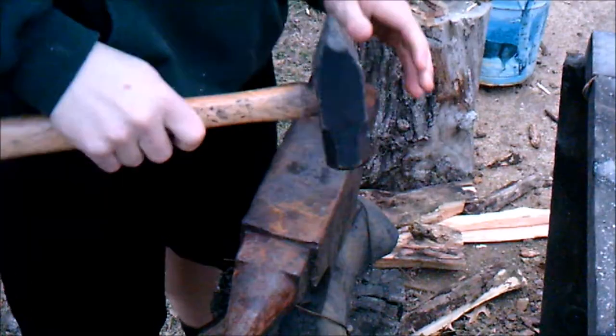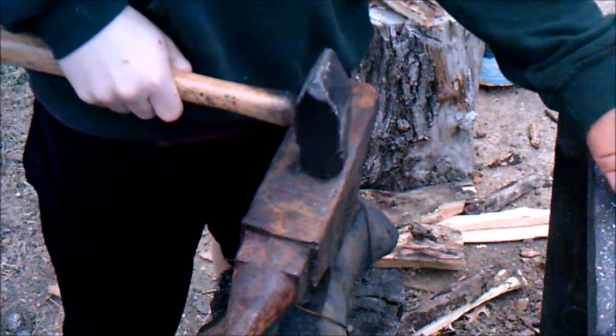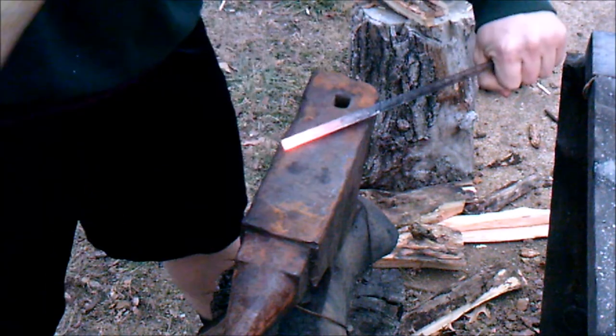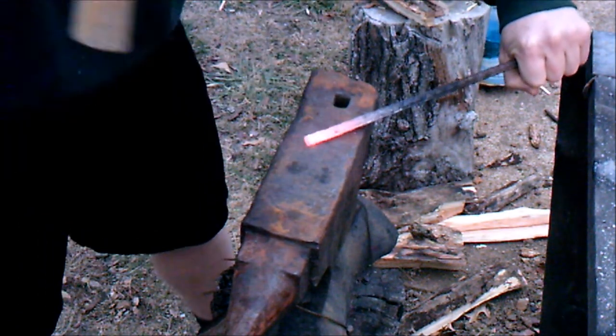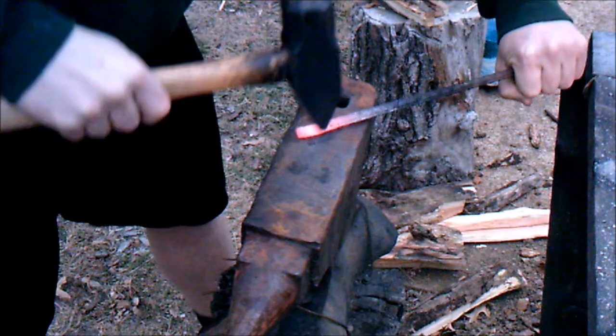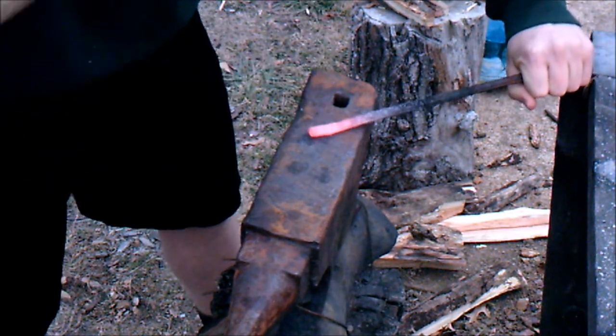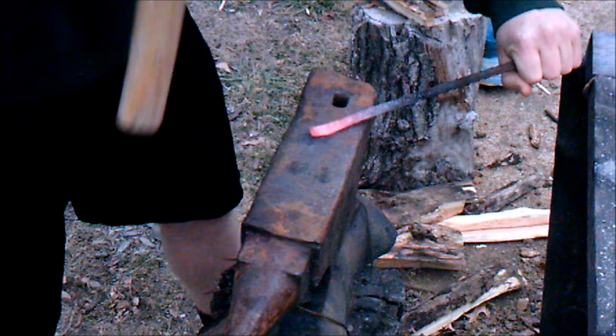Now one of the best ways to move metal really quickly is to use the cross pin inside your hammer. That's because there's less surface area, so more power is going into the very tip of your hammer.